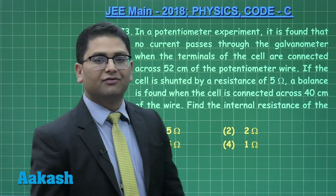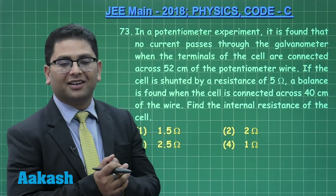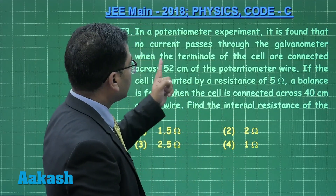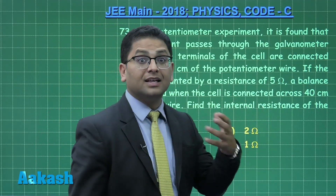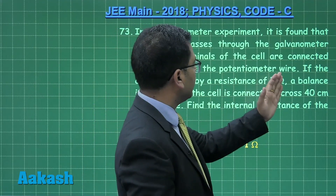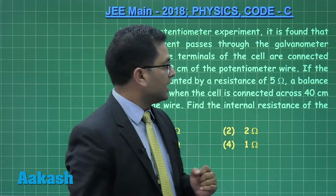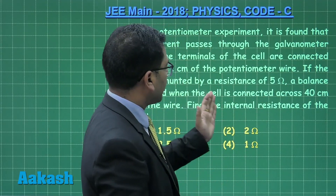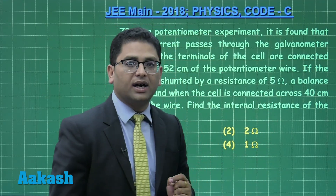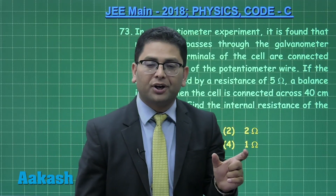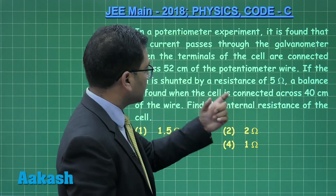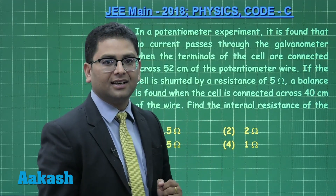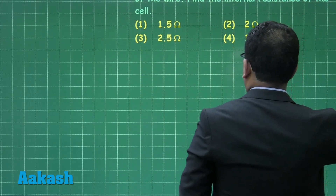Question 73 is from current electricity, specifically the experimental potentiometer topic. In a potentiometer experiment, no current passes through the galvanometer (null point) when the cell terminals are connected across 52 cm of the wire. When the cell is shunted by a resistance of 5 ohm, the balance point shifts to 40 cm. We need to find the internal resistance of the cell.